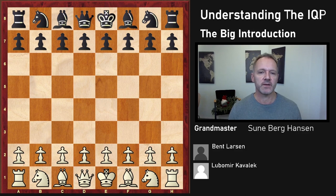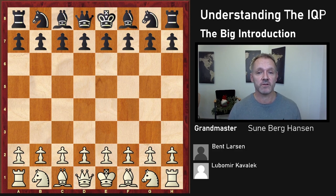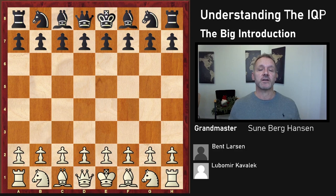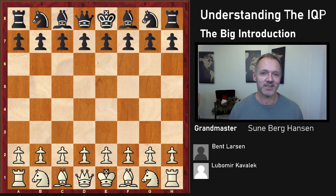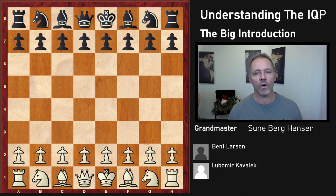It's an important structure because it arises in a range of openings — from the Panov variation in the Caro-Kann to the very topical Ragozin Queen's Gambit Decline at the world top level, and also the Nimzo-Indian, the Semi-Slav, and the Queen's Gambit Accepted. It's something you can get with both colors in a lot of openings, so it's very important to understand.